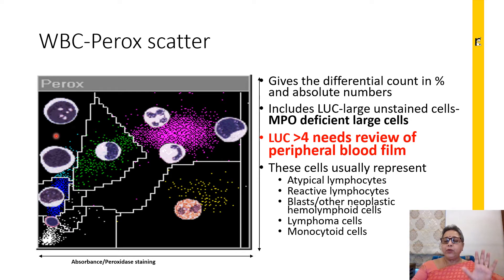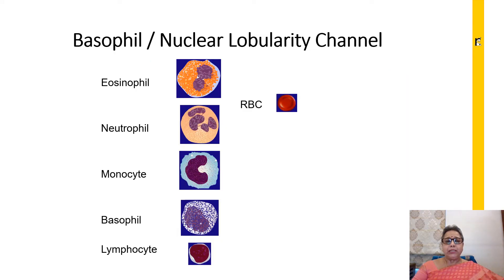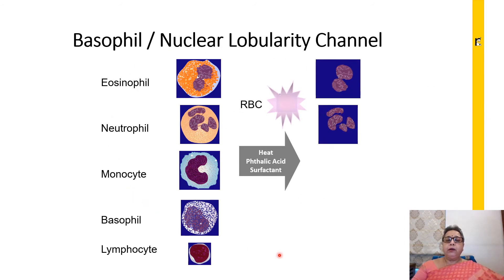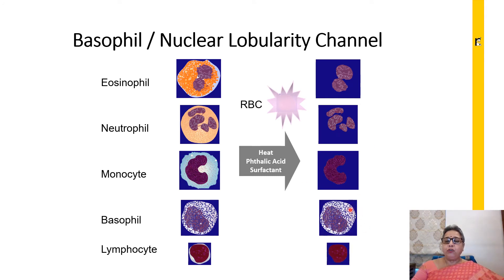This is one scatter obtained after staining with myeloperoxidase. There is a dual method of measuring the WBC — the next method is the basophil nuclear lobularity channel, because in the peroxidase channel, basophils were not yet counted. The basophils are counted in this channel, which primarily measures the total WBC count and the total number of basophils. Here again the RBCs get lysed, and this method makes use of the property that basophils are resistant to stripping by acid.